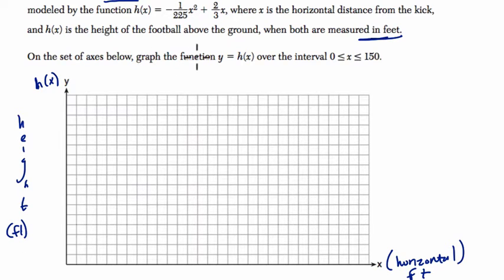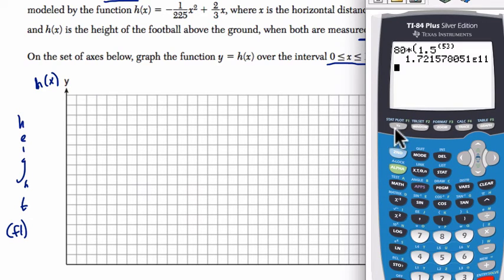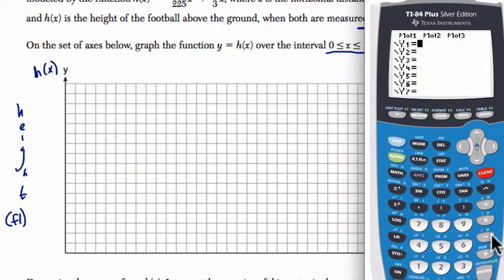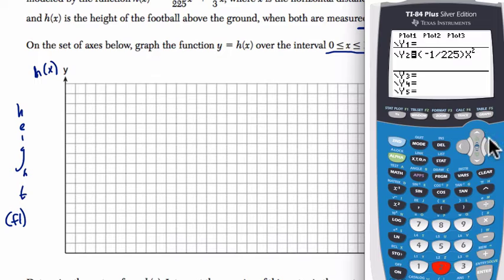And they want us to graph this function on the domain 0 through 150, so let's put our calculator to work here. Press y equals, and clear up any old functions. So, now we've got negative 1/225, so parenthesis negative 1 divided by 225, close parenthesis. And x is being squared, and then we want to add 2/3 of x, plus 2/3 of x. That's our function.